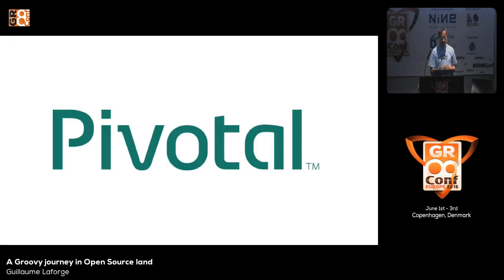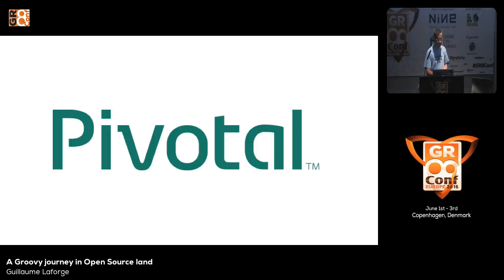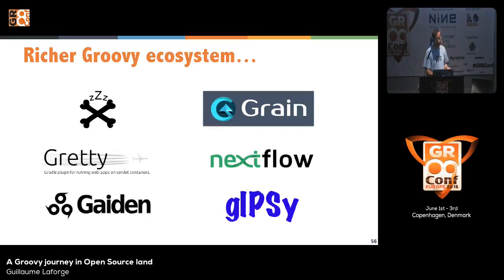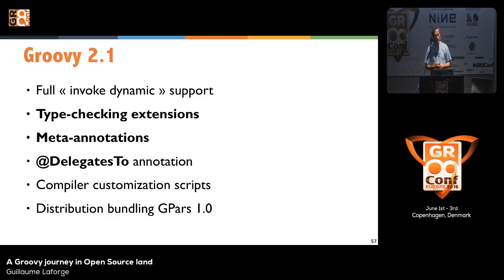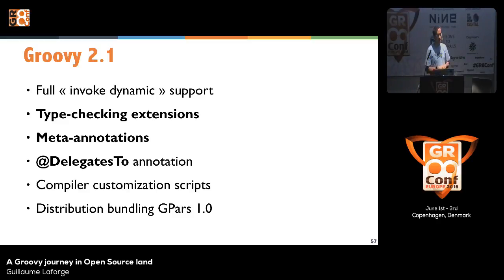In 2013, Pivotal was a spin-off of VMware with the Cloud Foundry and Spring Source stuff. We were part of Pivotal at that point. Groovy 2.1 brought further improvements — not necessarily big new features, but continuous improvement in type checking and invokedynamic support. Groovy 2.2 got us ready for Java 8, so that you could use closures wherever you'd use Java lambda expressions.